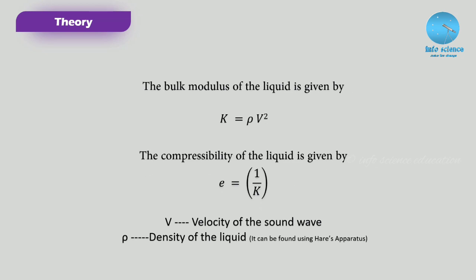We are also finding the bulk modulus and compressibility of the liquid. The equation for bulk modulus is k = ρv², and compressibility, which is the reciprocal of the bulk modulus, is given by β = 1/k, where v is the velocity of the sound wave and ρ is the density of the liquid used.